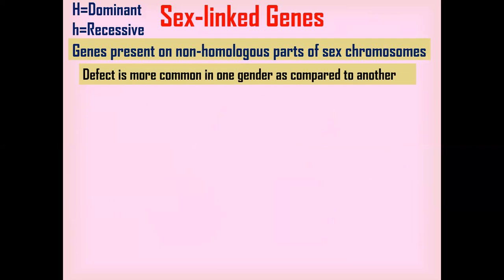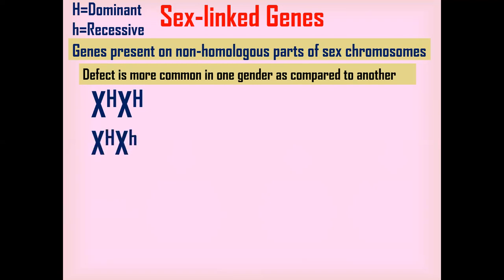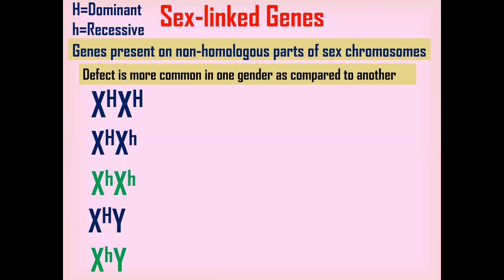We are going to examine this sex-linked trait based on the non-homologous 23rd pair of chromosomes. The capital H allele is dominant while lowercase h is recessive. Different genotypes possible in humans include: a female can be homozygous dominant, heterozygous, or homozygous recessive, while the male has the allele only on the X chromosome and not on the Y — so a male may carry capital H or lowercase h.